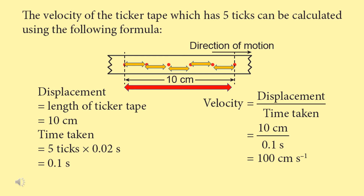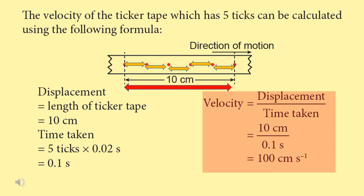Hence we can calculate the velocity. The velocity is 10 divided by 0.1, which is equal to 100 cm per second.